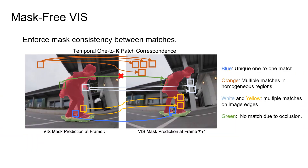We leverage the rich temporal consistency constraints by introducing the Temporal KNN Patch Loss, TK loss. Our TK loss finds one-to-many matches across frames through an efficient patch matching step followed by K nearest neighbor selection. A consistency loss is then enforced on the found matches, which is designed to replace traditional video mask losses requiring ground truth annotations.